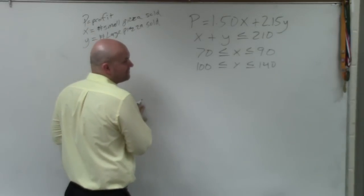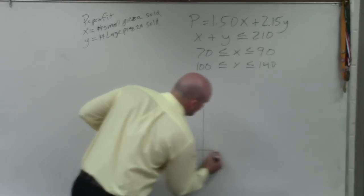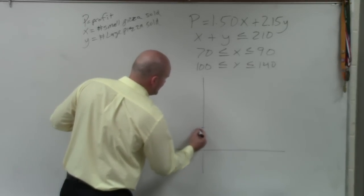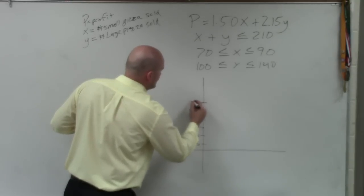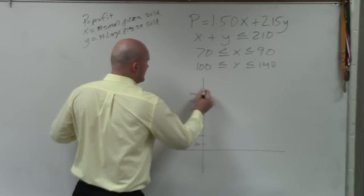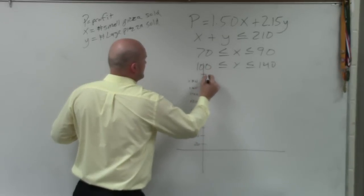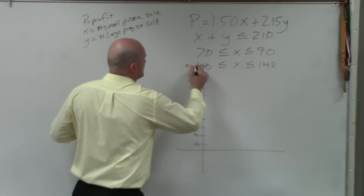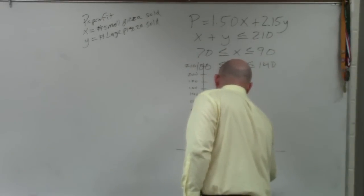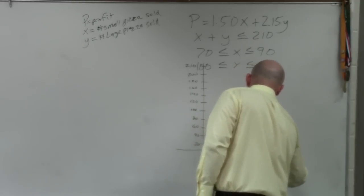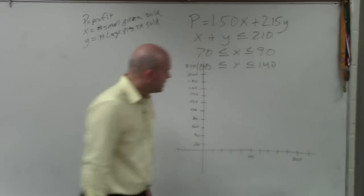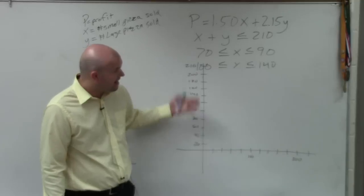Now, basically, to go ahead and graph this, let's go by 20s. 20, 40, 60, 80, 100, 120, 140, 160, 180, 200, 210. And 20, 40, 60, 80, 100, 20, 40, 60, 80, 100. So, we have 100 and 200, right? Now, I'm just going to try to estimate this best again.